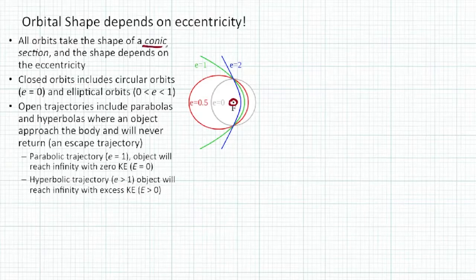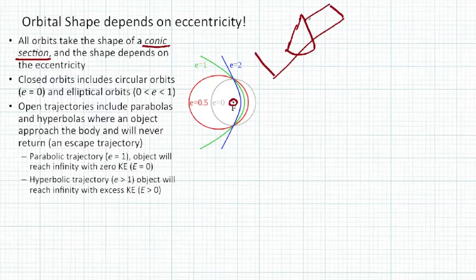What is a conic section? All orbits take the shape of a conic section. If you take a three-dimensional cone and cut a section out of it at an angle, you would have an ellipse. If you take a piece of paper and cut that slice through that cone, it would make an elliptical section. That's what conic section means—it's an ellipse.